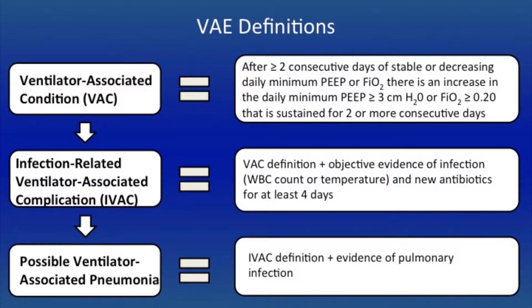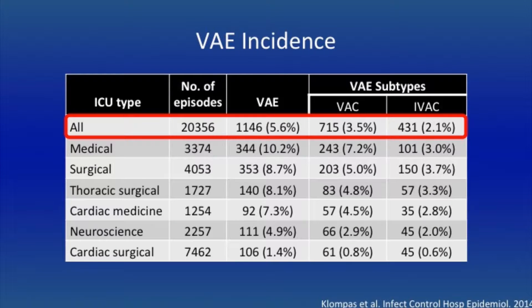There is still no national data published about the incidence of VAEs. The largest data comes from a single-center retrospective cohort study published by Klompas and colleagues, which looked at over 20,000 episodes of mechanical ventilation over a five-year period. They observed VAEs in about 6% of episodes — about six events per 100 episodes — which falls within the range of other studies that have put the range between four and seven events per 100 episodes. The highest incidence occurred in medical ICUs and the lowest in cardiac surgical ICUs.